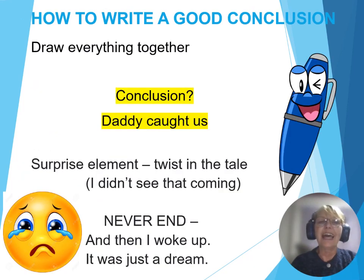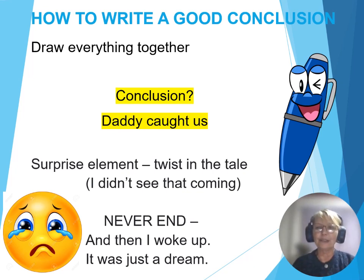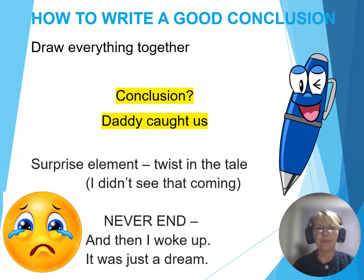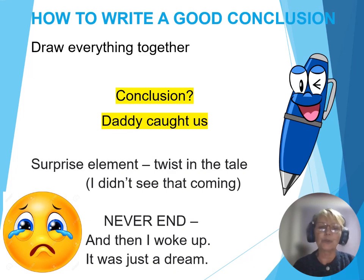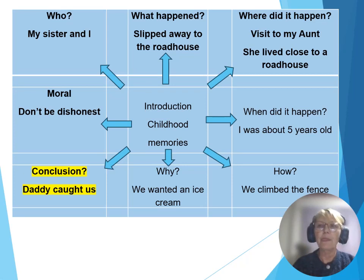With a conclusion, that is where you draw everything together. I'm going to tell you the story — just to put you in context of how it unfolds. The conclusion: my dad caught us. It could be a surprise element, a twist in the tale — one of those 'I didn't see that coming' moments. Please, never end with 'And then I woke up, and it was just a dream.' It kills any good story.